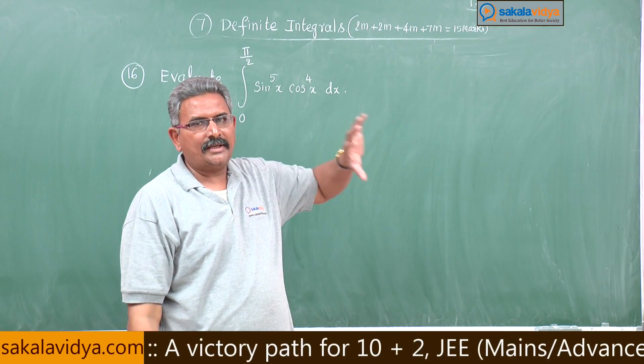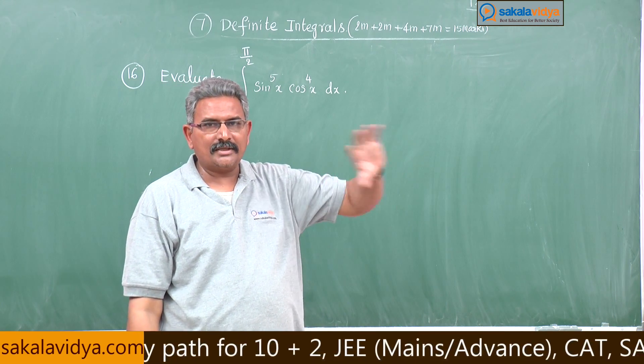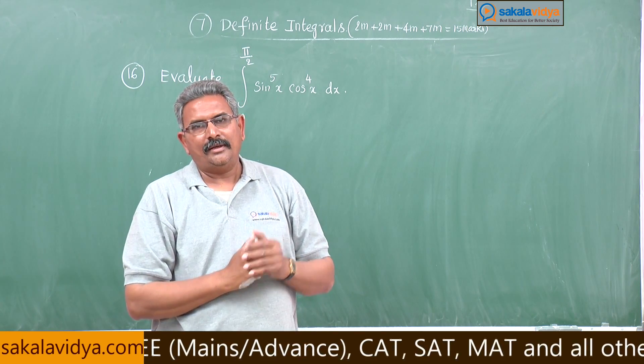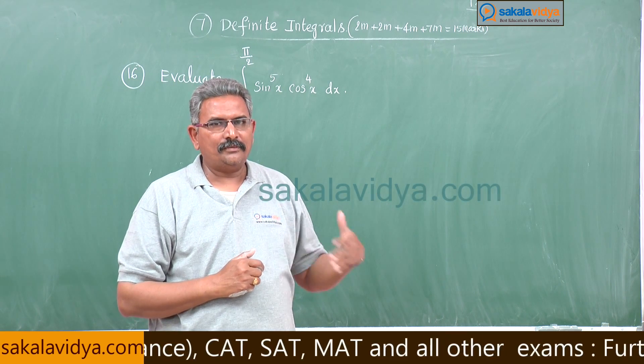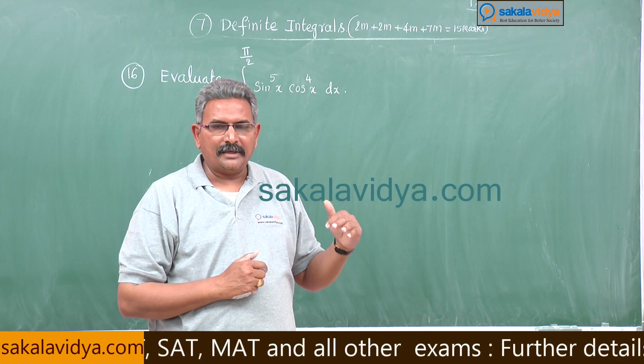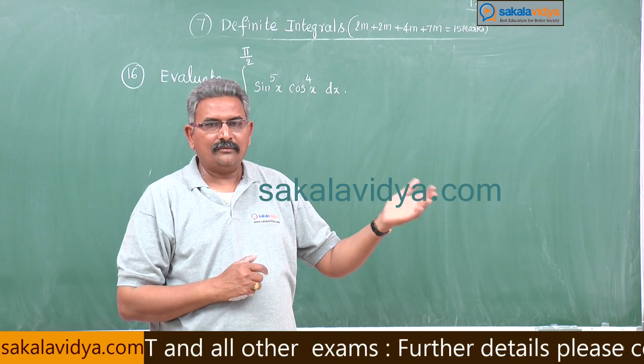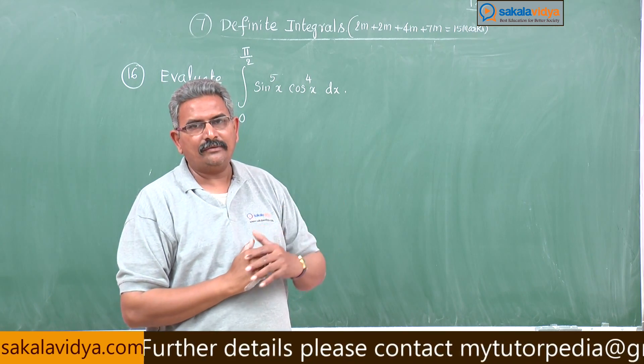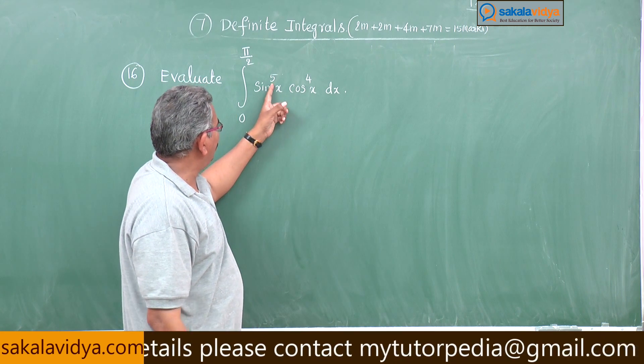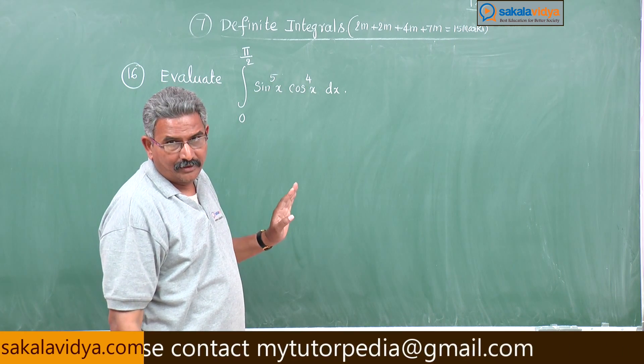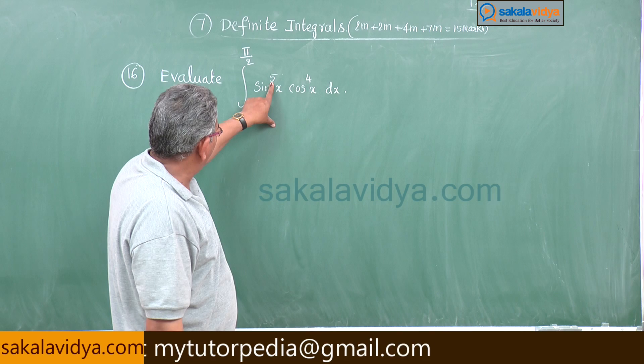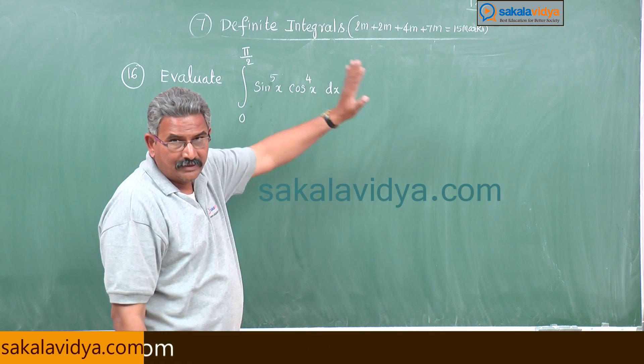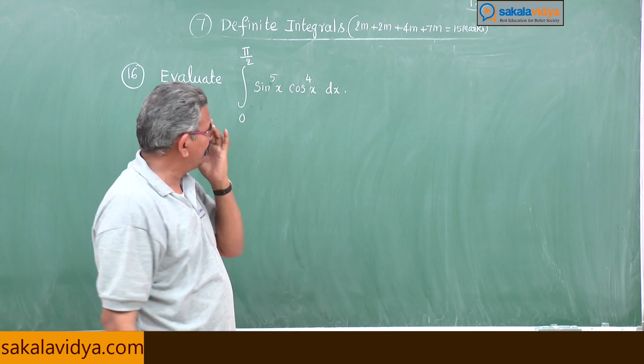Whenever 0 to pi by 2, sin x to the power of m, cos x to the power of n dx is there, we have the formula. Instead of 0 to pi by 2, if 0 to pi or minus pi by 2 to pi by 2 is given, we have to apply the properties. That will be a different case, but here we have the formula. Here m is odd and n is even. If m is even only, it ends with pi by 2.